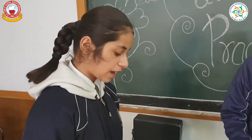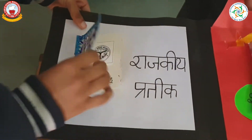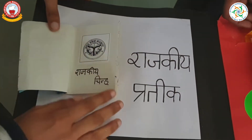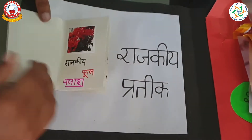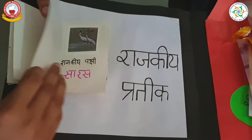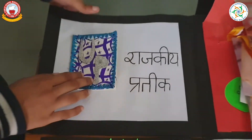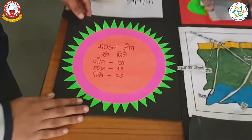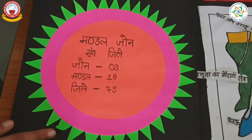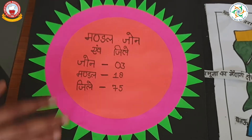This is the state emblem book of Uttar Pradesh. This includes the state sign of UP, state flower, state bird, etc. There are three zones in Uttar Pradesh, 18 Mandals and 75 districts.